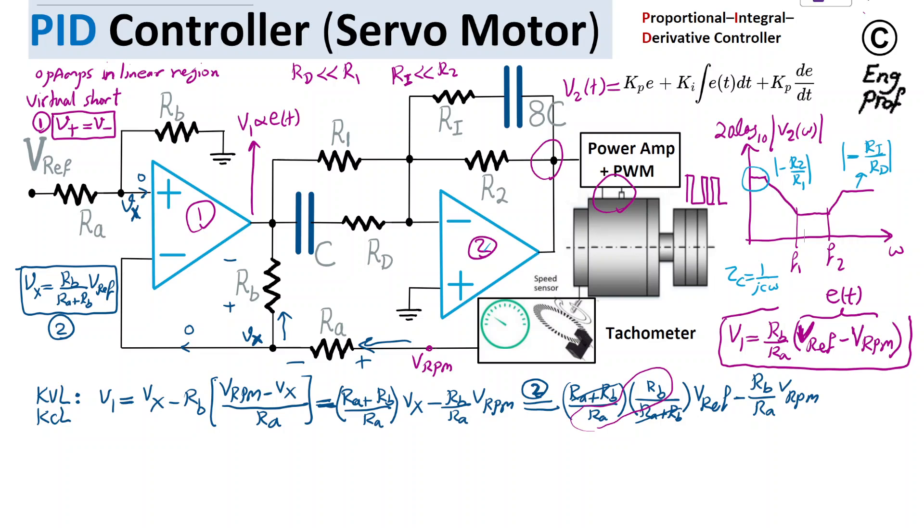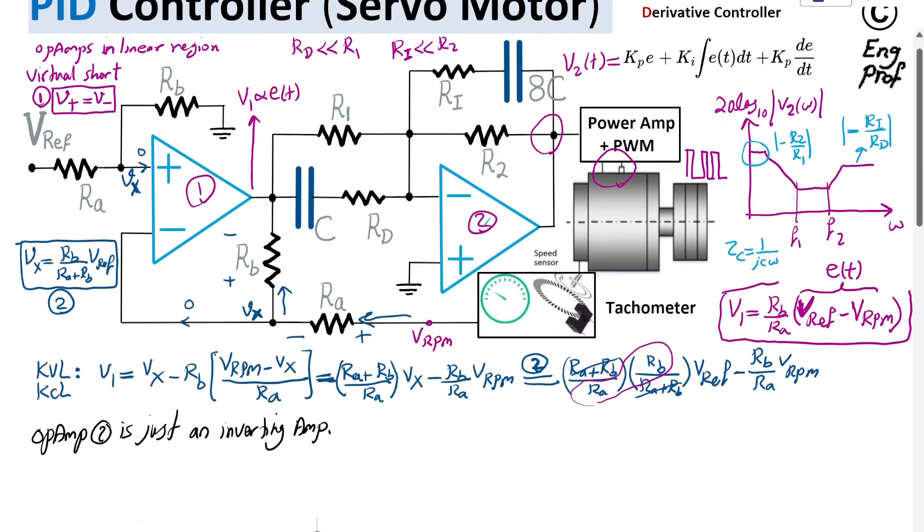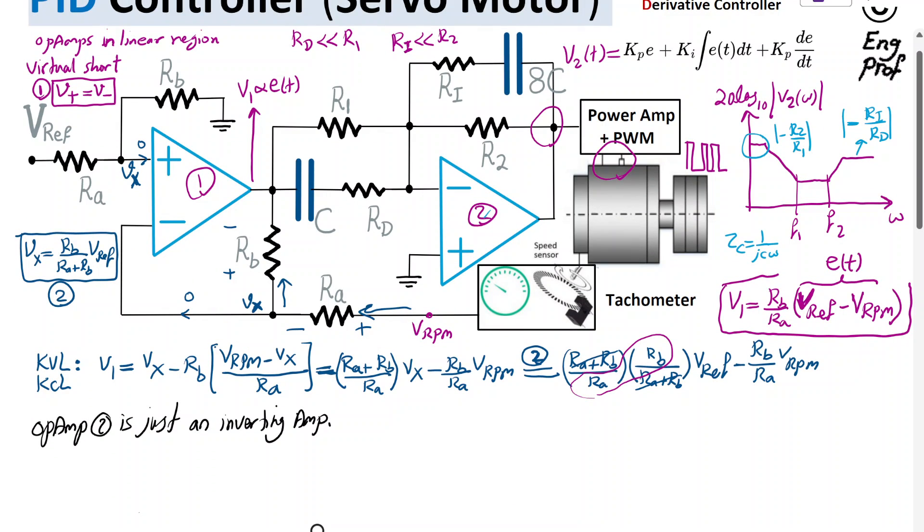The last thing I'm going to do is find the response of part 2, the second segment. Op-amp 2 is just an inverting amplifier here.